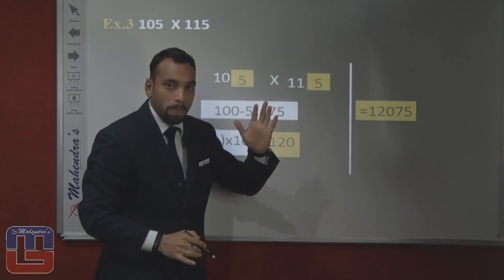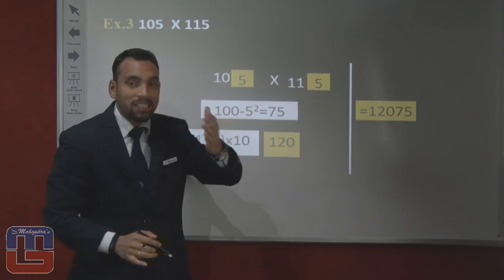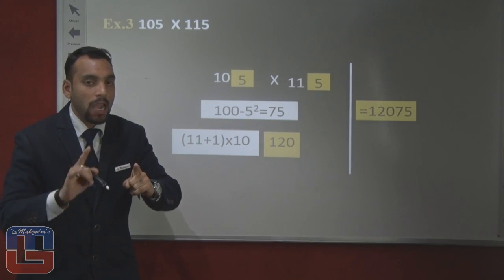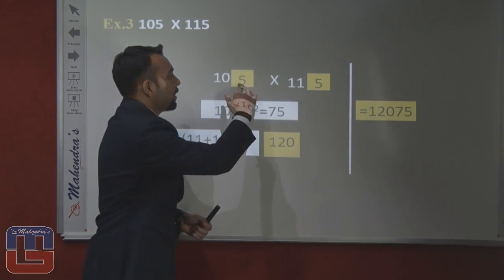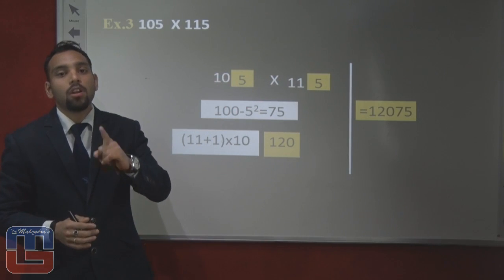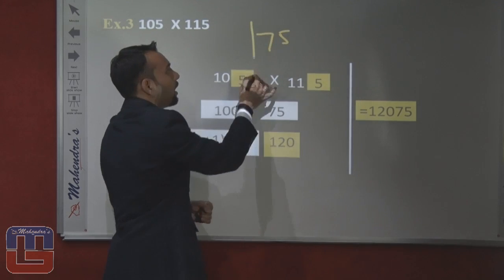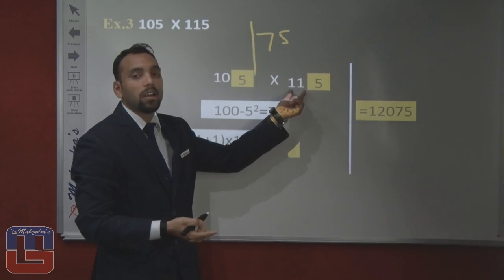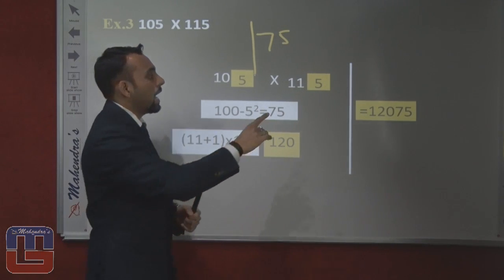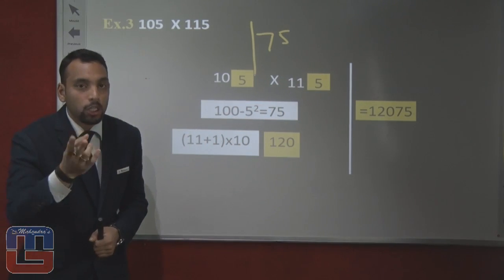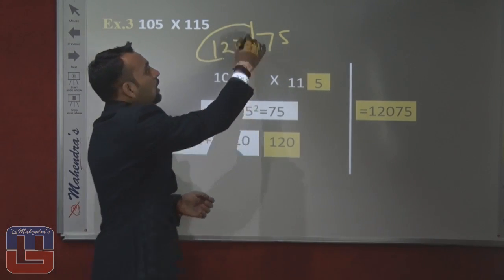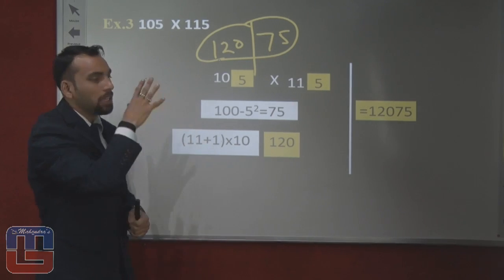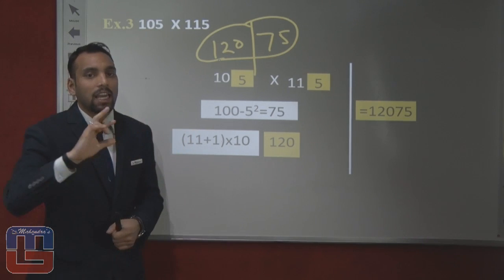Now 105 into 115. The last digit is 5 and the difference between the two numbers is 10, so the rule applies. 75 will always come. Now the tens parts are 11 and 10. Which is greater? 11. Add 1 to 11 to get 12, then multiply 12 by 10 to get 120. So our answer will be 12075. This is how we can easily calculate such multiplications in the examination.